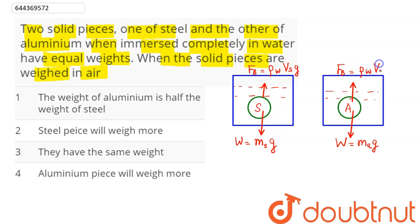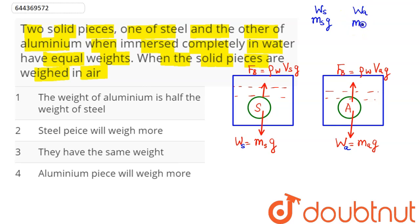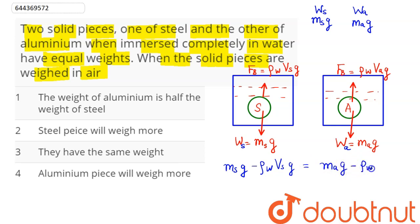Now we are asked whose weight will be more when weighed in air. In air there is only mg — we need to find whether weight of steel, m_s·g, is greater or weight of aluminium, m_a·g, is greater. Since in water they have equal apparent weights, we can write: m_s·g − ρ_w·V_s·g = m_a·g − ρ_w·V_a·g.